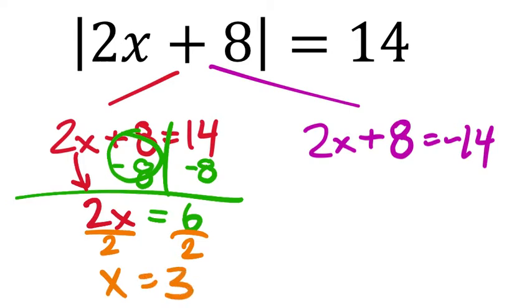We check in the original equation to see if that gives us a true statement. 2 times 3 is 6 — that was part of the plan. And 6 plus 8 is 14 — that's part of the plan. The absolute value of 14 is 14, so that checks out.